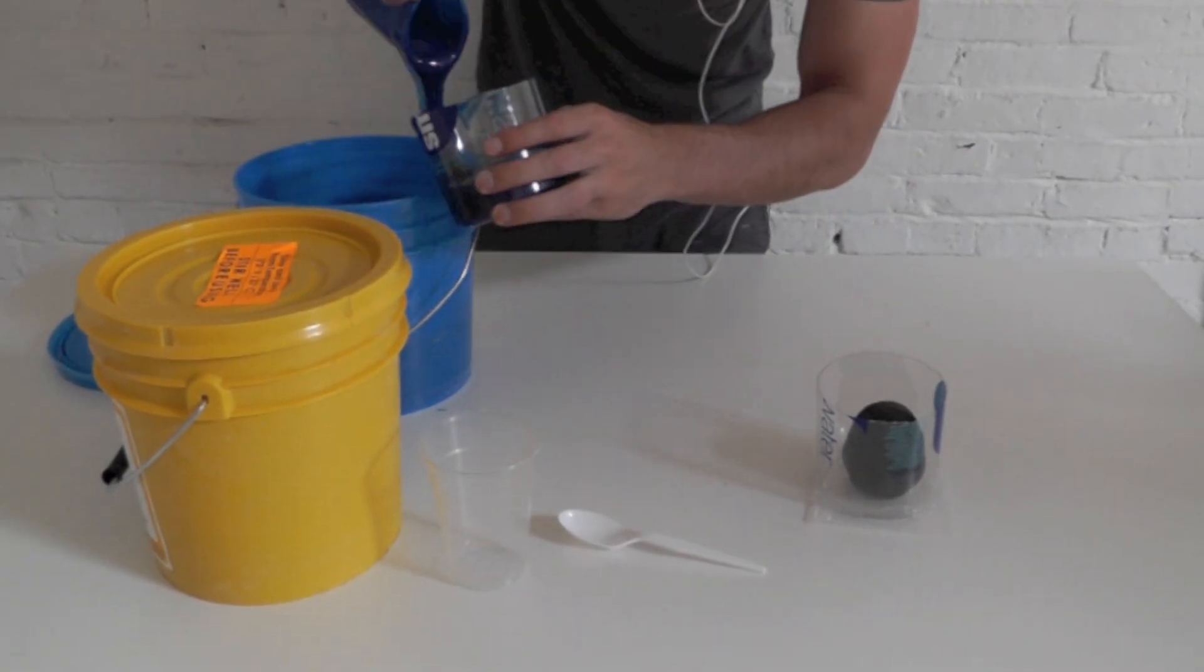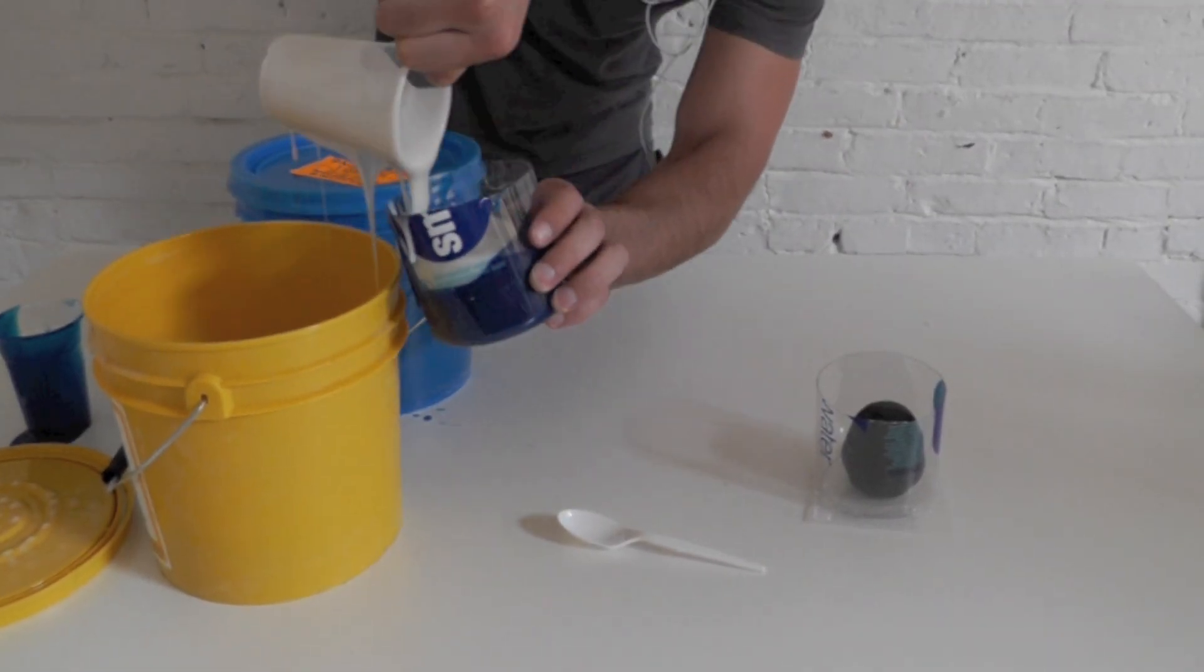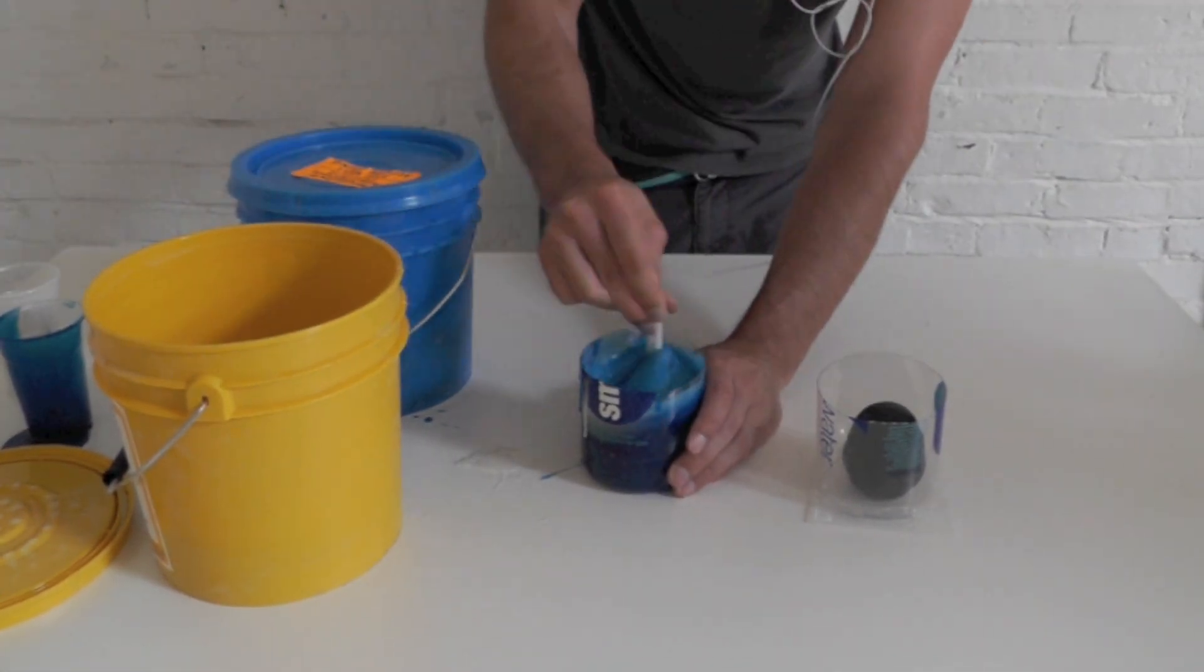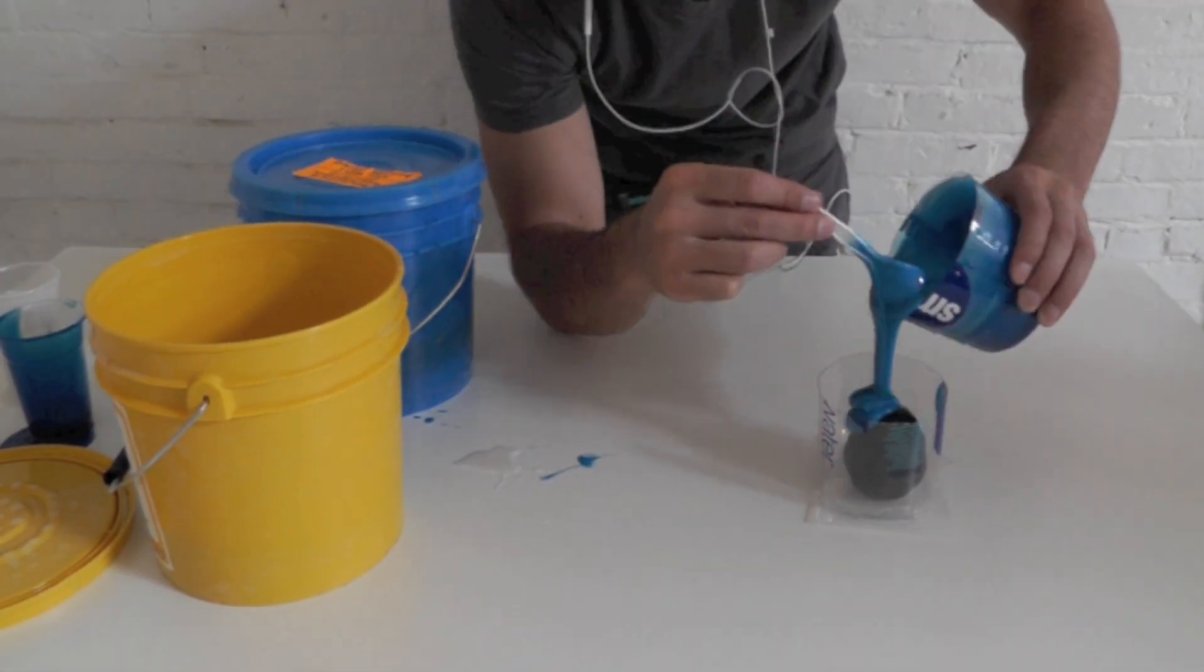Moldstar 30 is the best product I've found so far for casting concrete. It comes in two different parts. You mix them together and then pour them into your mold.